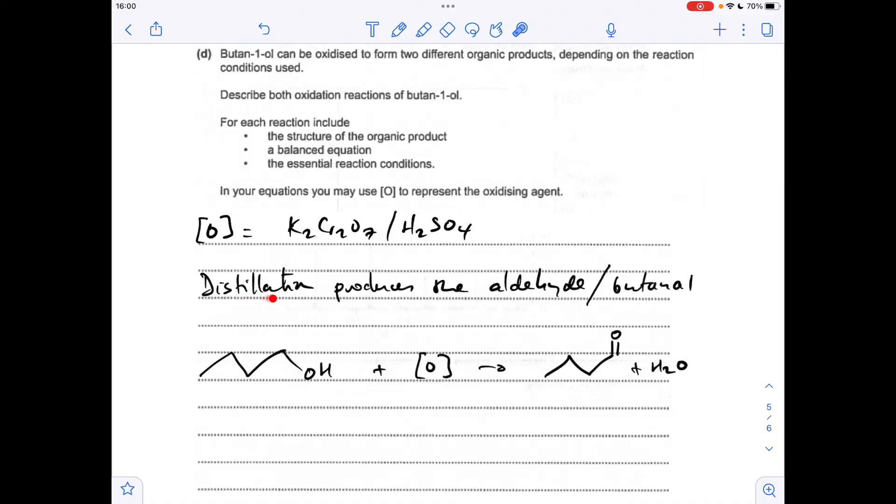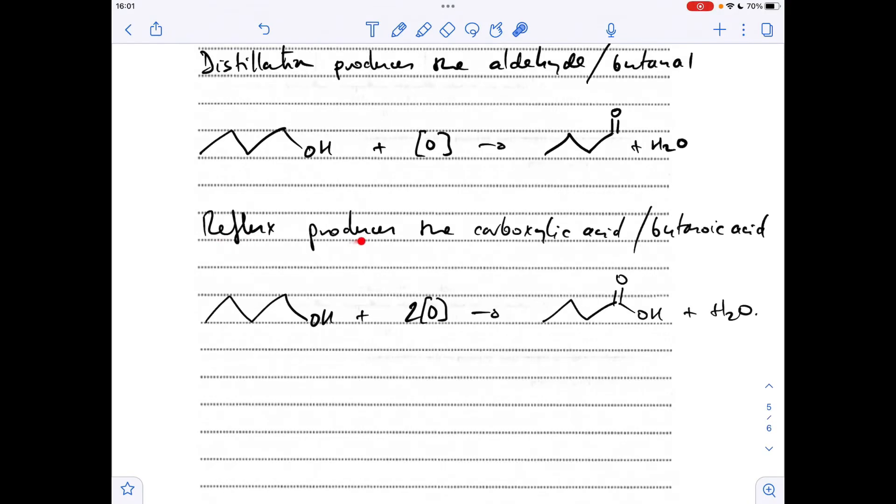The first reaction we'll look at is when you oxidize by distillation. Distillation remember produces the aldehyde, which in this case is going to be butanal, and I'm covering both of these bullet points here with this equation. We'll just do exactly the same for the other type of oxidation which is of course reflux, produces a carboxylic acid, in this case butanoic acid. There's the equation there. Remember two moles of oxidizing agent needed now, but we only get one mole of H2O. The water is formed in that first oxidation.